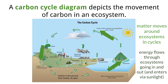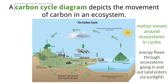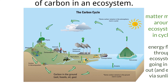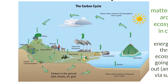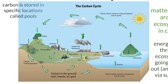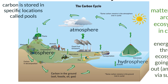Scientists create diagrams to show how matter cycles around ecosystems, and when we are talking about carbon, we call this diagram a carbon cycle. No matter where we start, we should be able to move around and get back to the beginning — hence the cycle. Any location that carbon is stored in, no matter the state, is called a pool — so the atmosphere, biosphere, hydrosphere, etc. are all considered different pools because they all hold carbon in one form or another.